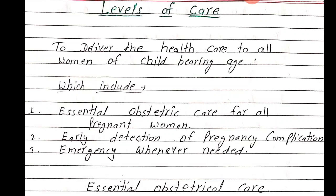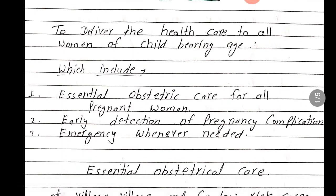Sabse pahle dekhte hai, childbearing age kya hoti hai. Jo range hai, woh childbearing age ki woh 15 to 45 year maani jati hai. But based on biological optimum time duration kya hoti hai? 20 to 35. Before 20 or above 35 year age mein pregnancy risky ho sakti hai ya phir complication arise ho sakti hai. Isliye best childbearing age 20 to 35 hoti hai.